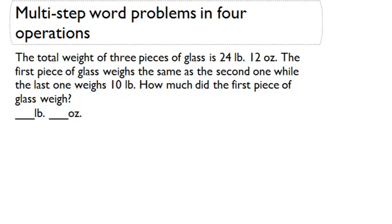Now let's talk about how to solve a multi-step word problem in four operations. The problem in front of us says the total weight of three pieces of glass is 24 pounds and 12 ounces. The first piece of glass weighs the same amount as the second one, while the last one weighs 10 pounds. How much did the first piece of glass weigh? The important information here is that we have three pieces of glass and they total 24 pounds and 12 ounces.